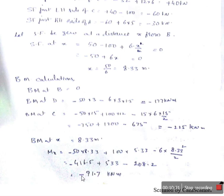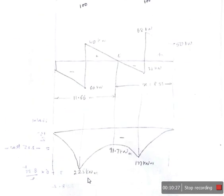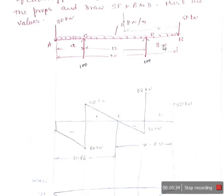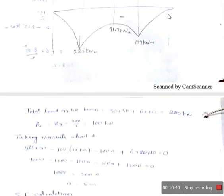The bending moment at B is 0. The bending moment at D is minus 50 into 3 minus 6 into 3 into 1.5, which equals minus 177 kilonewton meters. The bending moment at C and other key points are calculated similarly. Substituting X equals 8.33, the bending moment at E is minus 91.7 kilonewton meters. We then plot the shear force and bending moment diagrams with these values. Since the loading is a total UDL, all curves in the bending moment diagram are parabolas.